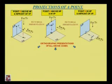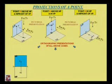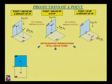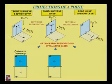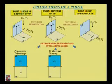Now we will see the orthographic presentations of all three conditions. In the first condition, point A-dash is on the vertical plane — that is, on or above the XY line — and point A is on the horizontal plane. The horizontal plane is rotated 90 degrees clockwise, so after rotation, point A will be below the XY line. Thus the front view is above the XY line and the top view is below the XY line.